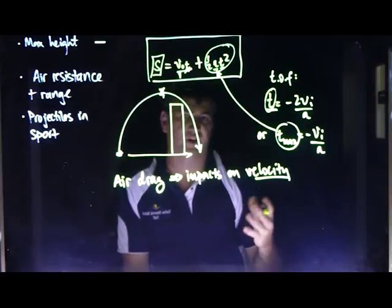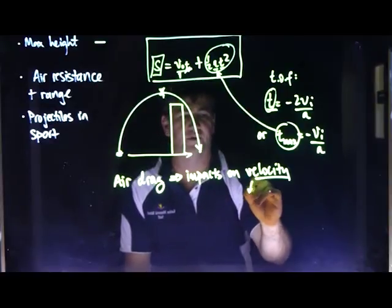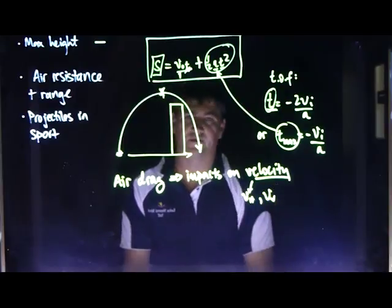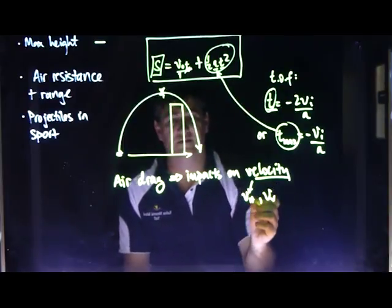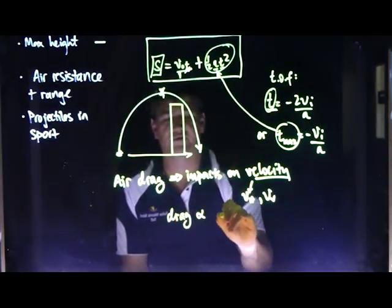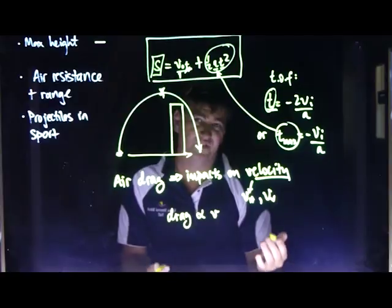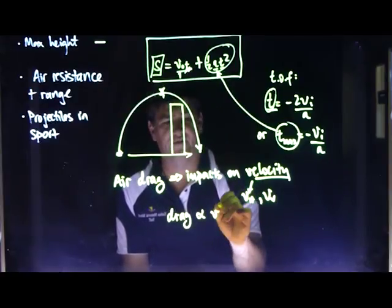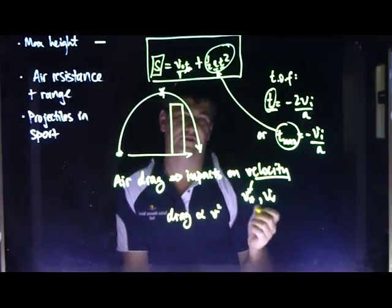Notice how I haven't said just the vertical or just the horizontal because it's actually both. So impacts on the horizontal one, impacts on the vertical one. The higher it is, the more the impact is. So we can say that drag is proportional to V, some sort of speed or velocity. And I'm fairly certain you'll actually find it's proportional to the speed squared.